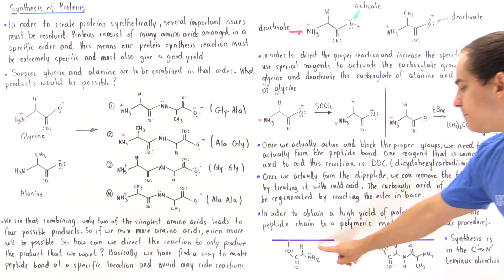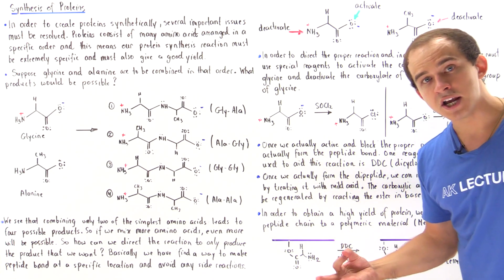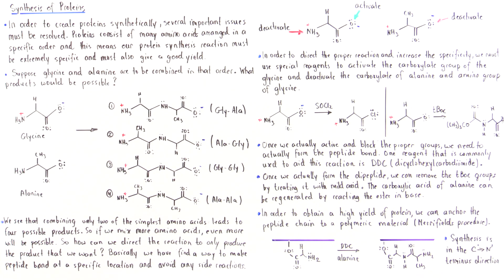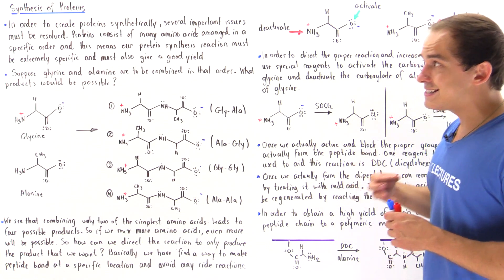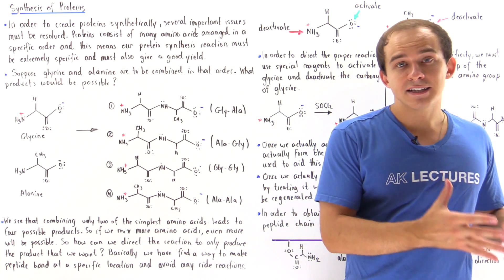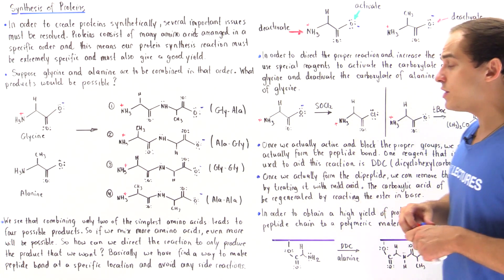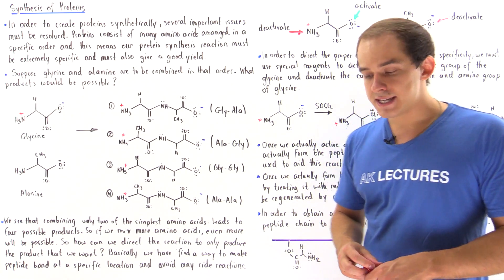For example, if we begin with glycine and anchor it to the polymeric material, then mix it with DCC and alanine, we attach that alanine to our molecule as shown. The two key things we must ensure in any synthetic protein synthesis are: first, using the proper activating and deactivating groups to direct the sequence of amino acids; and second, using Merrifield's procedure to anchor our amino acid chain to the polymeric material in order to increase yield.